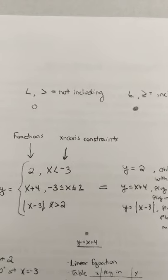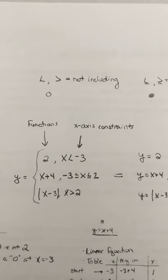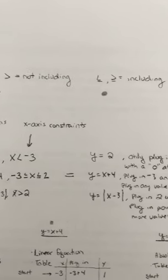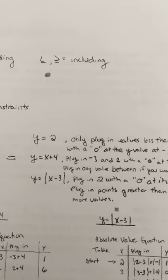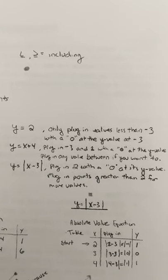When graphing it, if you have the less than or greater than, that means that you are not including it. So we would use an open circle in our graph. If it was less than or equal to or greater than equal to, then that means we are including.